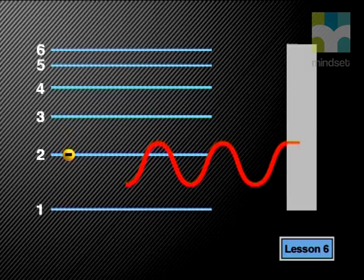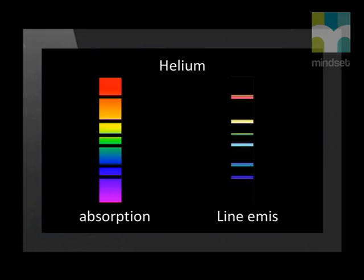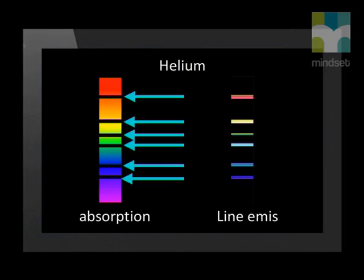Later, the gas emits these colors as the excited electrons fall back to their ground states. But this emitted light is scattered in many directions rather than only in the direction of the original light. Because of this, the dark absorption bands are still seen in the absorption spectrum.